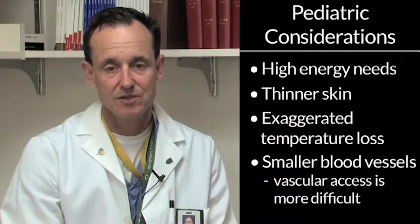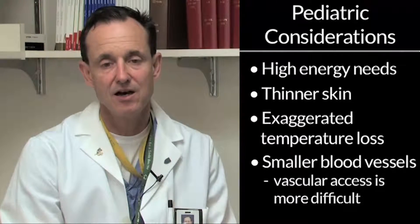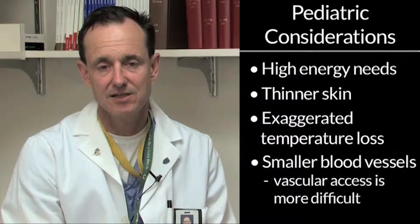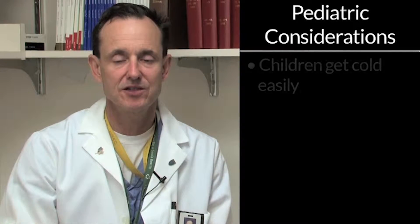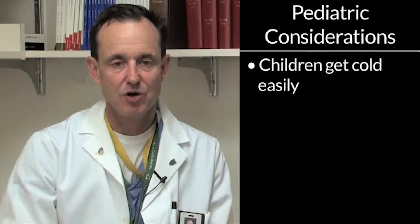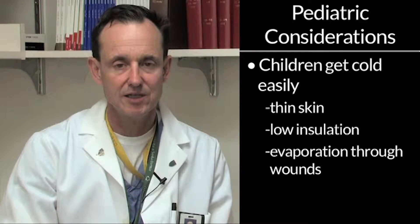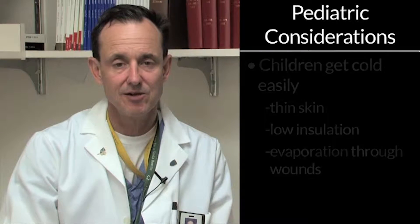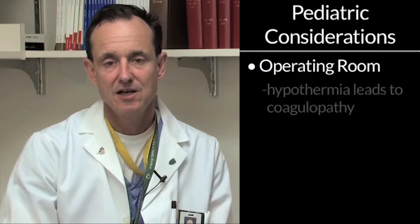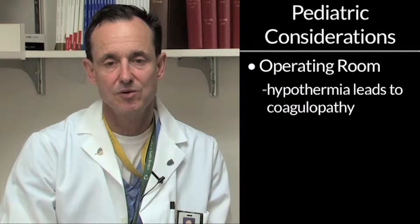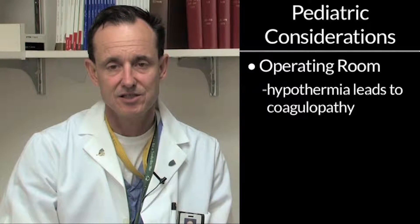There is no reason that children should have a higher mortality with the same size injury as a young adult. It is very important to keep in mind that children get cold easily, especially small children with thin skin — not a lot of insulation — and they are evaporating through their wounds. This is particularly important in the operating room because hypothermia will lead to coagulopathy, and if you're doing an operation that demands an intact coagulation cascade, you really want to pay attention to this. Constantly monitor the temperature of the child.